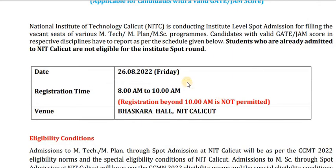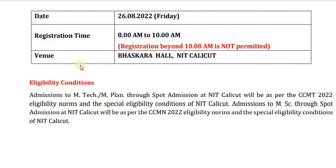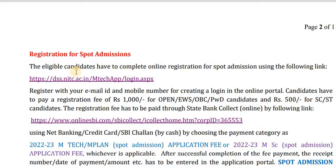Students who have already been admitted in NIT Calicut are not eligible for the institute spot round. Eligibility conditions are according to the CCMT 2022 eligibility norms and eligibility conditions of NIT Calicut. MSc through spot admission will also be as per CCMT 2022 eligibility norms. They have given the registration link, and only registered candidates can appear in person on 26th at Baskara Hall, NIT Calicut.